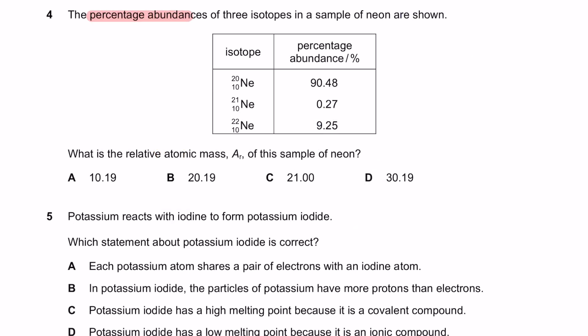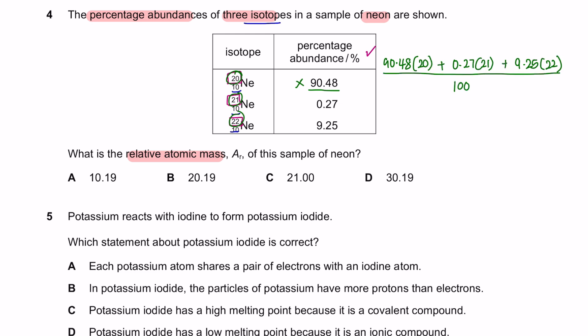Question 4: the percentage abundances of 3 isotopes in a sample of neon are shown. Isotopes are elements that have the same proton number but a different nuclear number. To find the relative atomic mass given percentage abundance, multiply each percentage abundance by its nuclear number, add them all together, and divide by 100. Put these values in your calculator and you will get 20.19. So the answer is B.